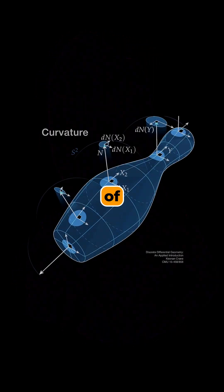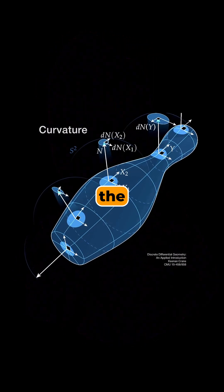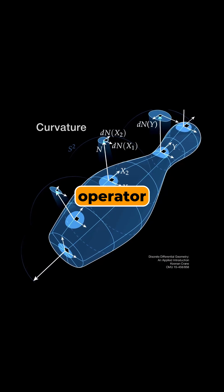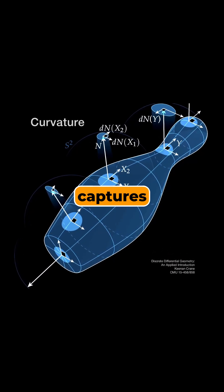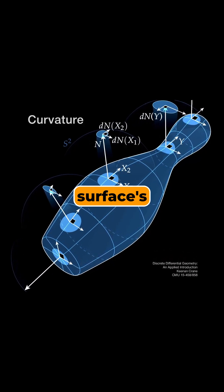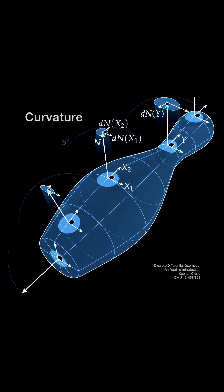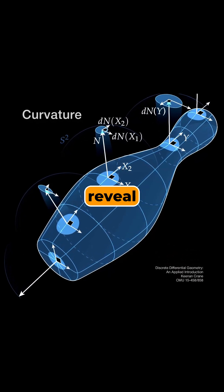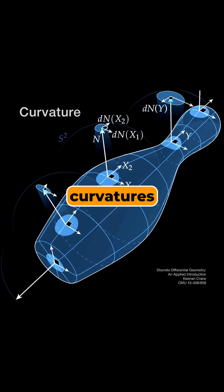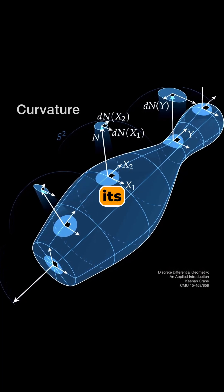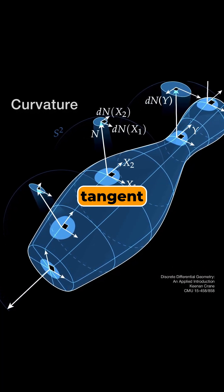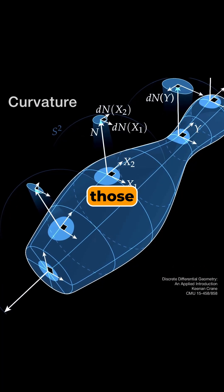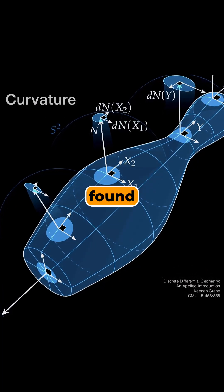At the heart of curvature lies the shape operator, a mathematical object that captures the surface's local bending. Its eigenvalues reveal the principal curvatures, while its eigenvectors give the tangent directions where those curvatures are found.